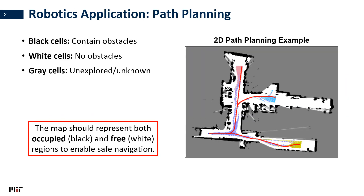As an example, a 2D map of the environment used for robotics navigation is shown on the right, where black cells represent obstacles, white cells represent obstacle-free regions, and grey cells represent unexplored regions. To ensure safe navigation, the robot should travel a long path that lies within the free space to avoid obstacles, as shown as color lines in the figure. Thus, a 3D map should also accurately represent both occupied and free regions in the environment.